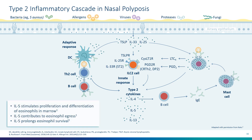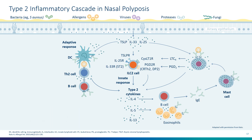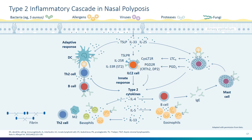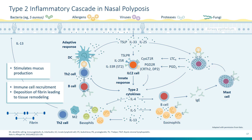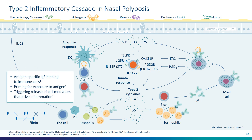IL-5 will induce eosinophil trafficking and is a survival factor for eosinophils. In the context of remodeling and polyposis formation, IL-13 plays an important role. IL-13 can induce matrix deposition and stimulate mucus secretion and goblet cell hypertrophy and hyperplasia. Some of those pathways are mediated by antigen-specific IgE binding of immunocytes, which perpetuates and orchestrates this inflammatory diathesis — and you can start to understand how this remodeling interacts with the ongoing inflammation.